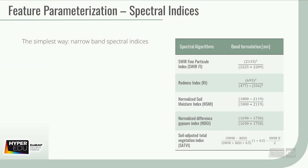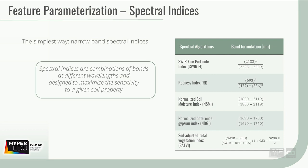The simplest way to parameterize features from hyperspectral data are narrow-band spectral indices. Spectral indices are combinations of bands at different wavelengths, and designed to maximize the sensitivity to a given biophysical or biochemical property. The advantage of indices is that they are really easy to calculate, and there are several well-established combinations.